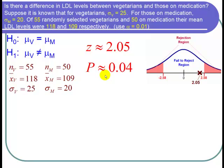If we use the method of p-values, then p is about 0.04. Alpha is 0.01. The p-value is greater than alpha. So we fail to reject the null hypothesis.